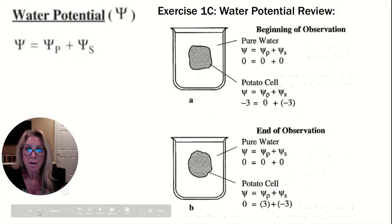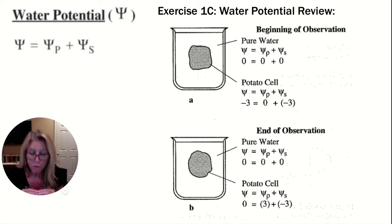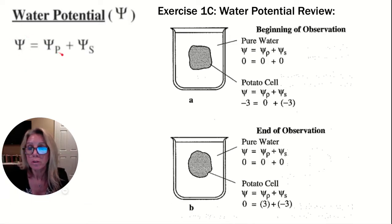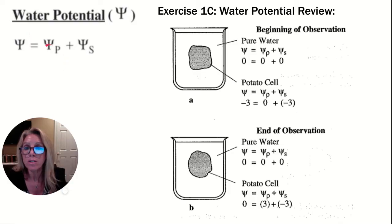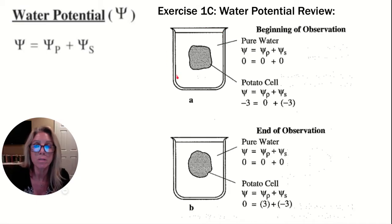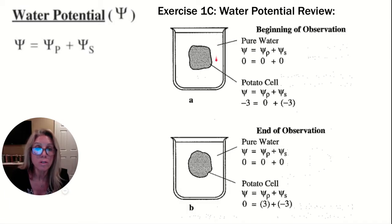Now a side note on water potential — mostly relevant for things with cell walls. Water potential equals two factors: pressure potential and solute potential. Solute potential is how much salt or sugar is dissolved in it. Pressure potential refers to cell walls and their ability to push back. In an open beaker, there's no applied pressure — just atmospheric pressure — so pressure potential is zero. Pure distilled water has a water potential of zero — no solutes, no pressure.